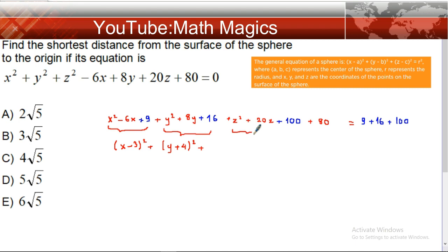(y + 4)² plus (z + 10)² plus 80 is now equal to 125. If we move 80 to the other side, the equation equals